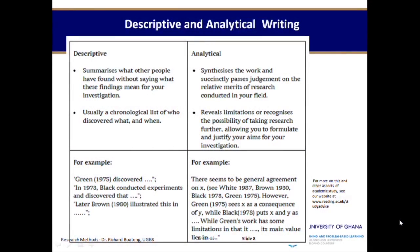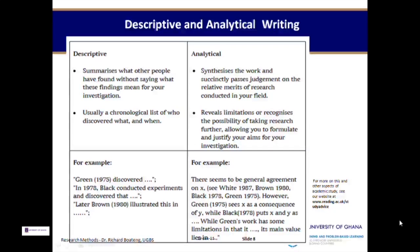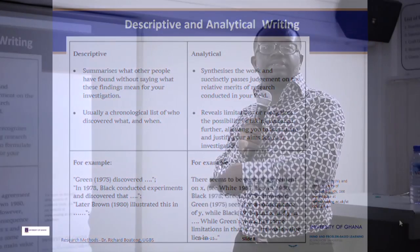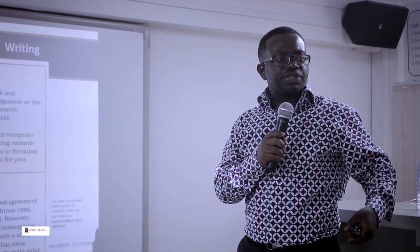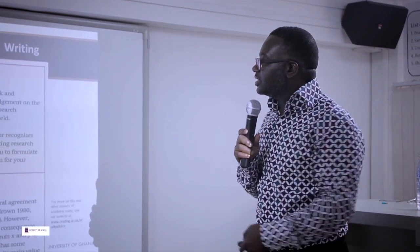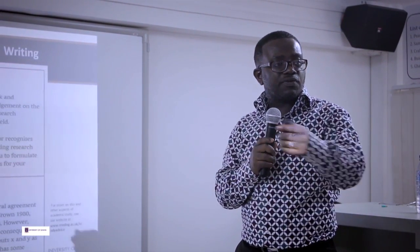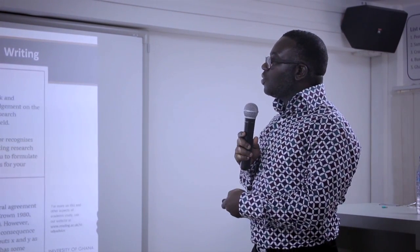There are different ways we express ourselves in literature write-ups. We can write in a descriptive way or in an analytical way. Descriptive writing usually summarizes what other people have found without saying what those findings mean for our investigation. For example, we can just say that research on corruption in Africa has been done from different perspectives — this person did it in South Africa where they found the church plays a key role, or someone did it in Ghana and found that efficient policies can curb corruption. That is just a summary, a chronological list or overview of different papers.